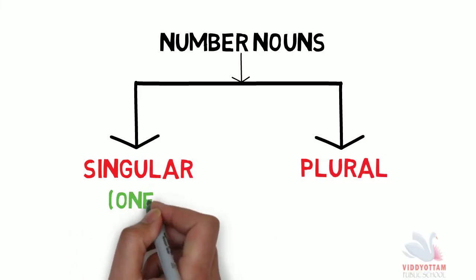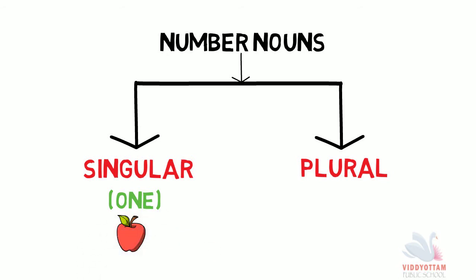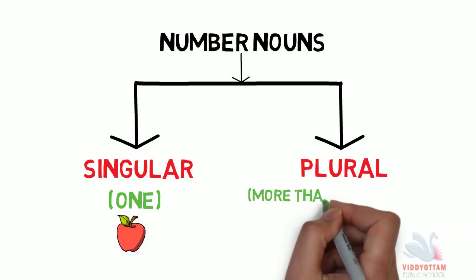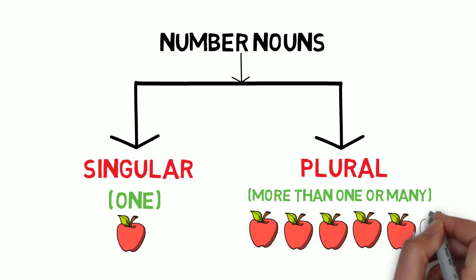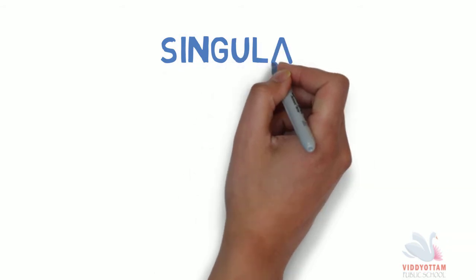Singular means anything that is one of its kind, and plural means when there is more than one of that person, animal, thing or any place. So let's go through the chapter.